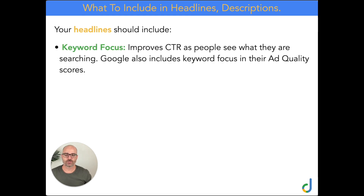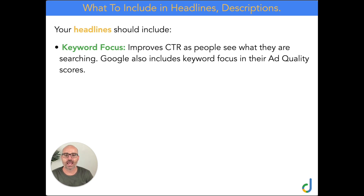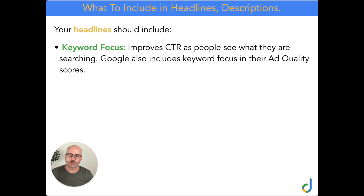The first of the four things is keyword focus. This improves your CTR — click-through ratio — which is the percentage of times people see your ad versus click on it. They actually see what they're searching for. If someone searches 'buy men's shoes' and your headline says 'Buy Men's Shoes Here,' you've got a great chance of them clicking. Google also includes keyword focus in their ad quality scores, because ultimately they want to match search intent with ads and websites that match what people are looking for.